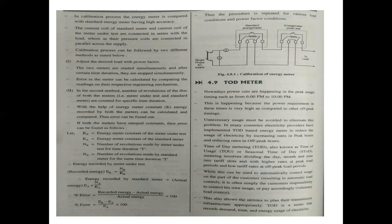The error in the meter can be calculated by comparing the readings on their respective registering mechanisms. If the standard energy meter shows reading X and the meter under test shows reading Y, then the difference between them is the error. In the second method, the number of revolutions of the disk of both meters are counted for a specific time duration. With the help of the energy meter constant, the energy recorded by both meters can be calculated using the formula: Energy recorded = Number of revolutions / Energy meter constant.